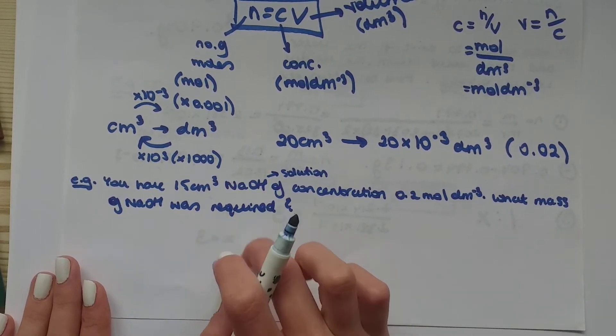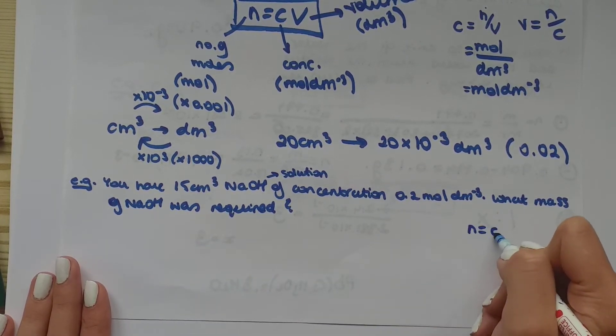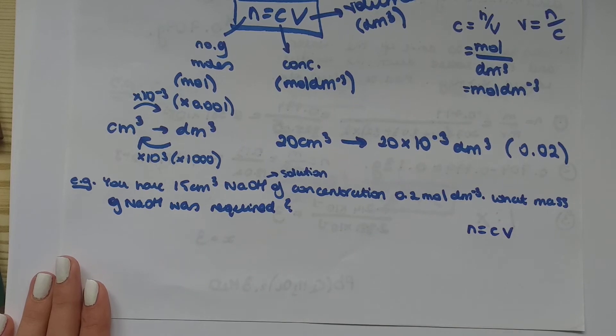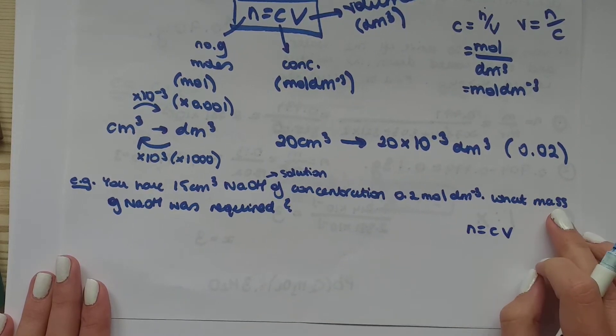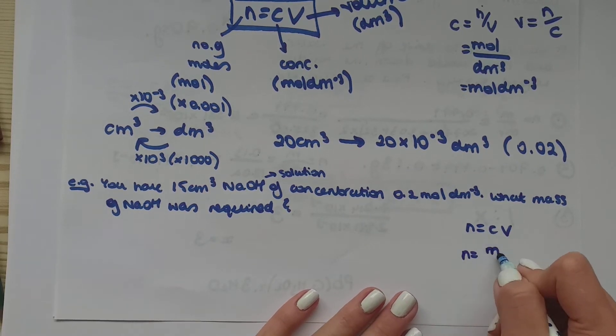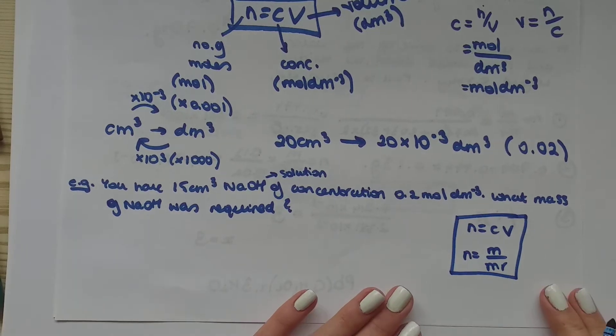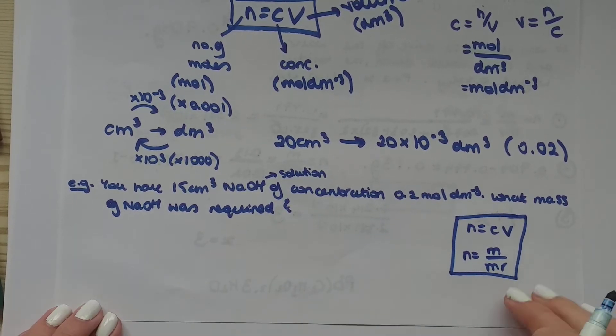So first of all, you have a volume, you have a concentration. So that's an equation that we're going to use. Then you also have mass mentioned. So the equation you know that's using mass is n equals mass over mr. So these are two equations that you will be required to use.